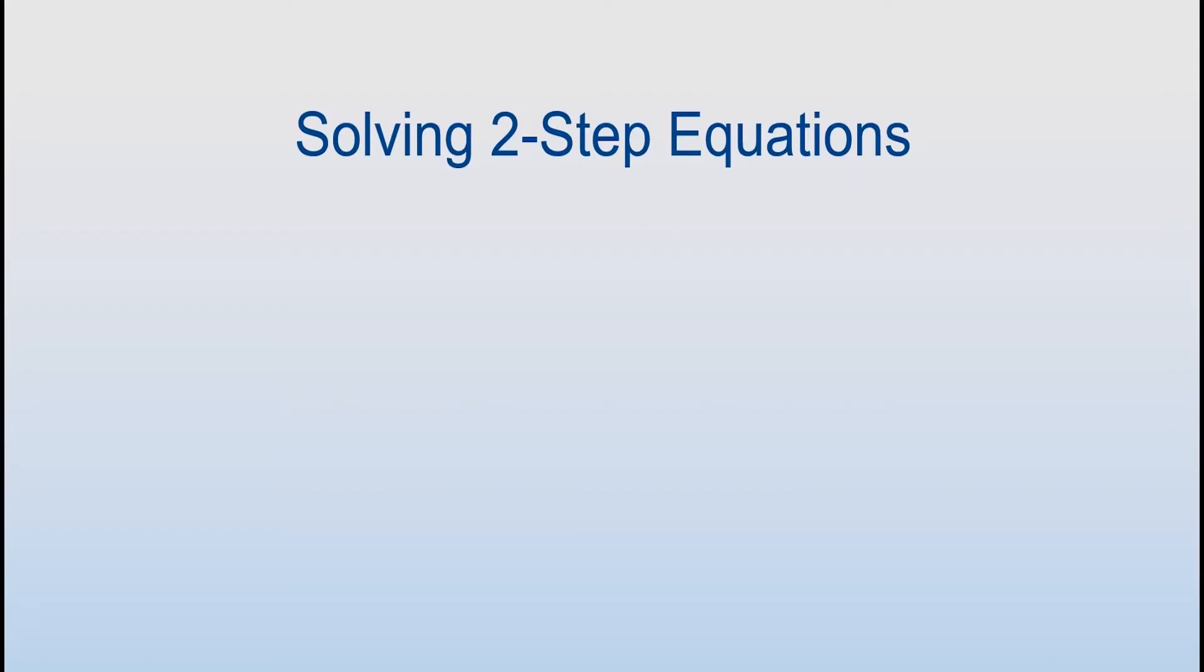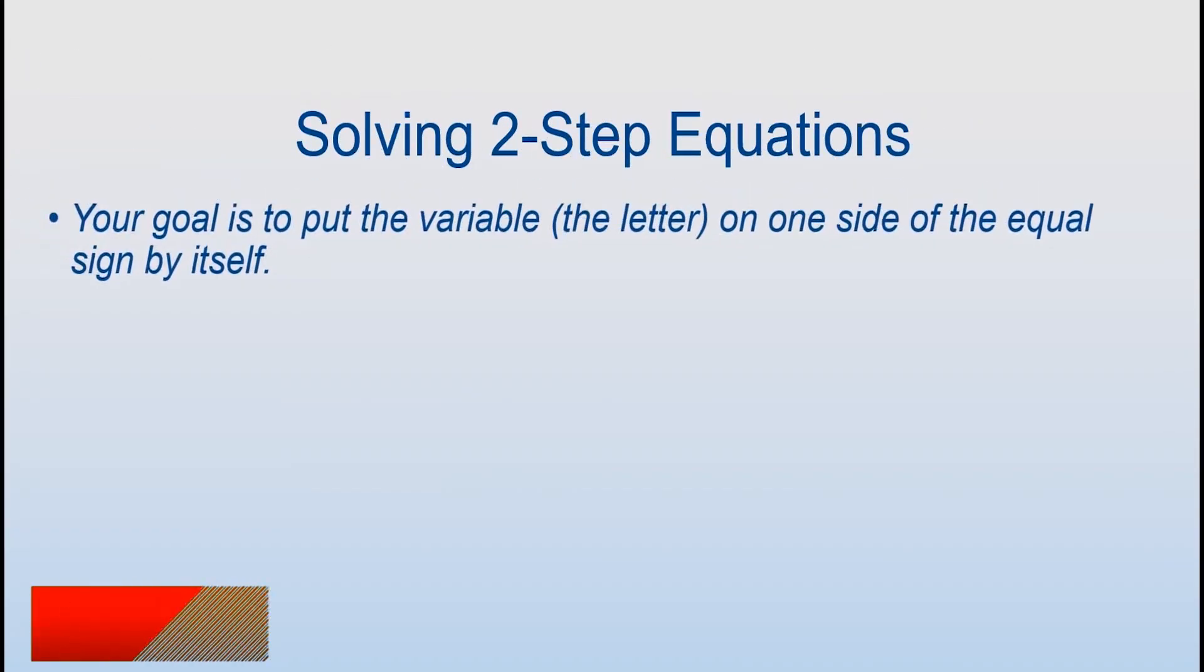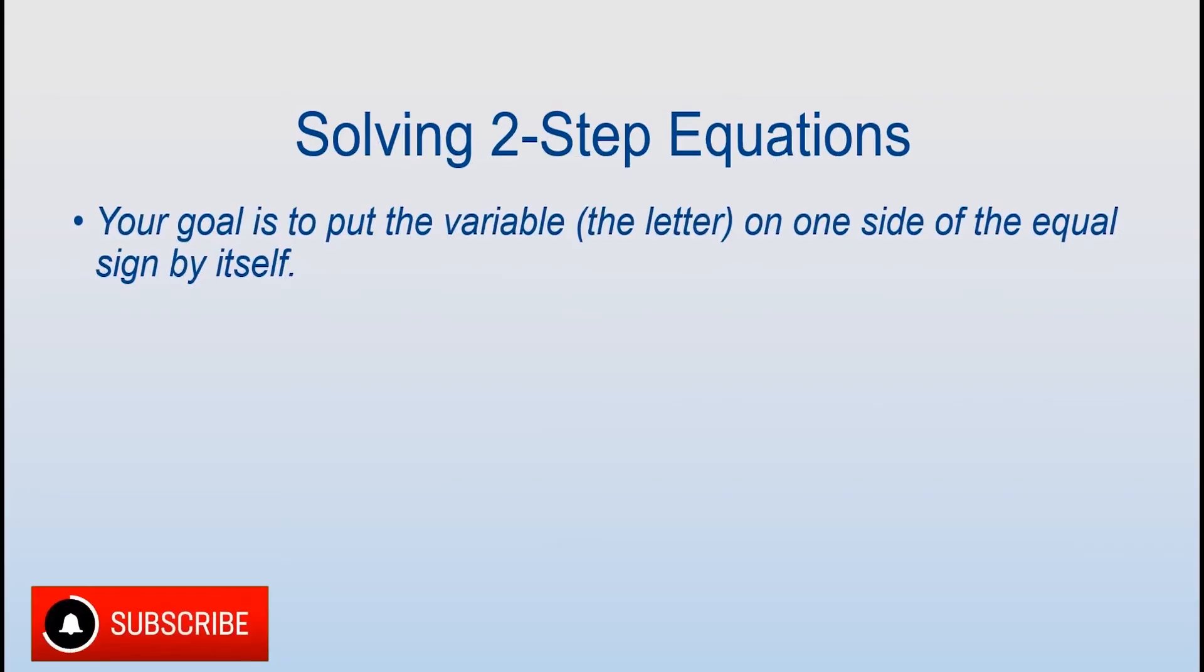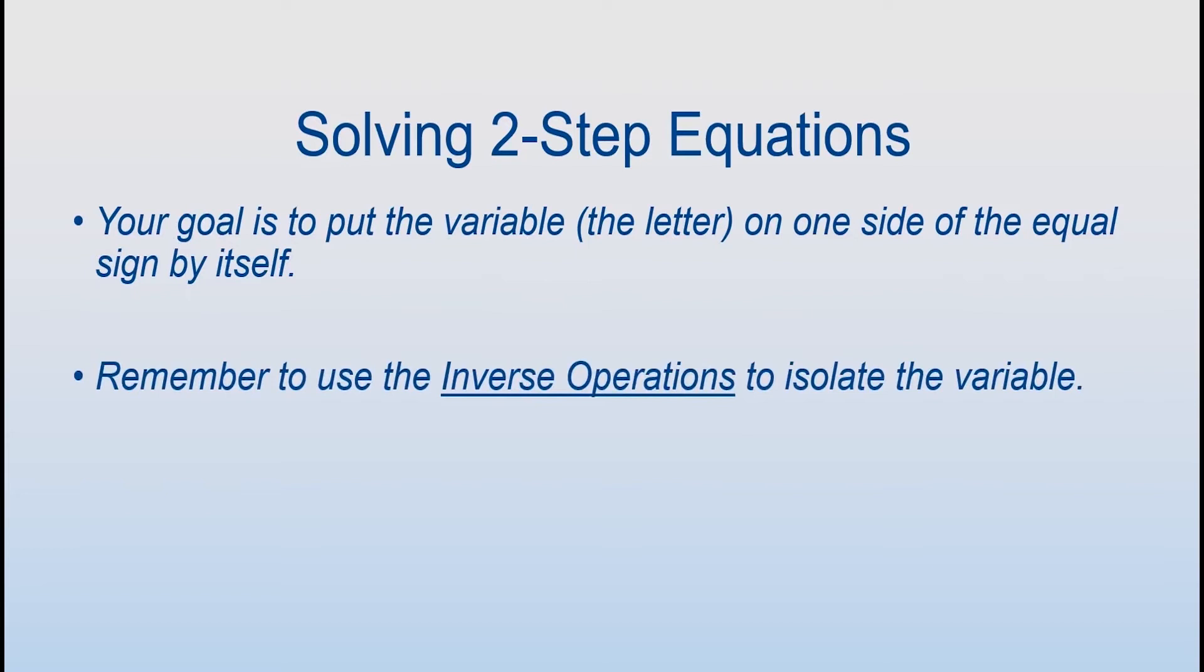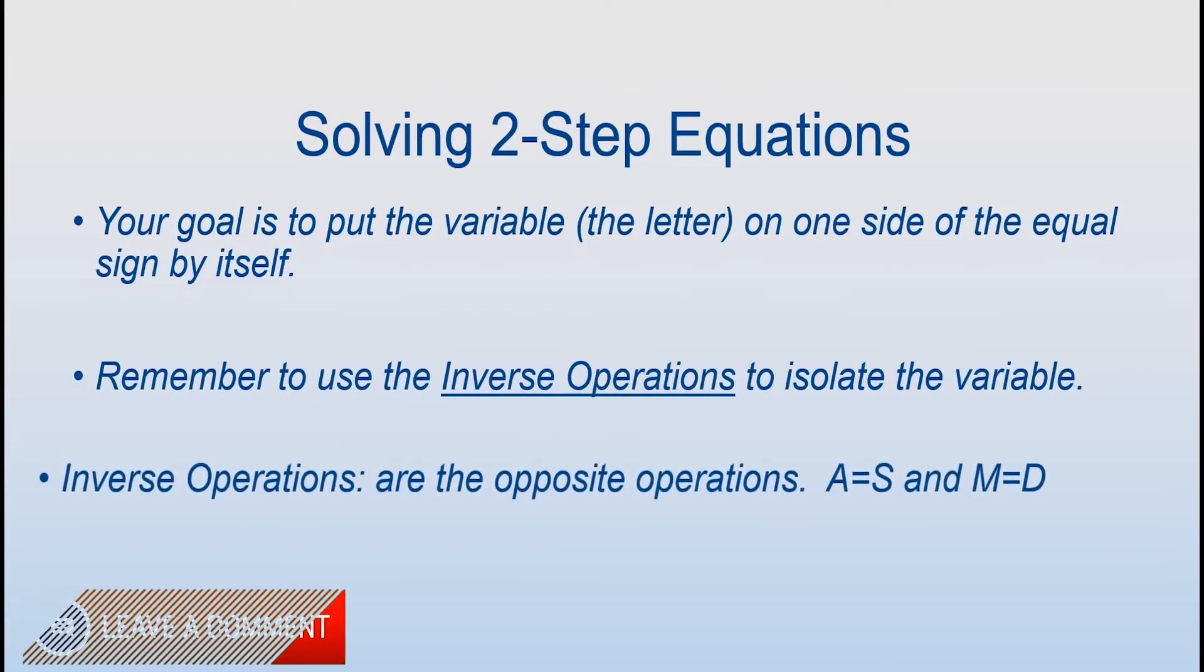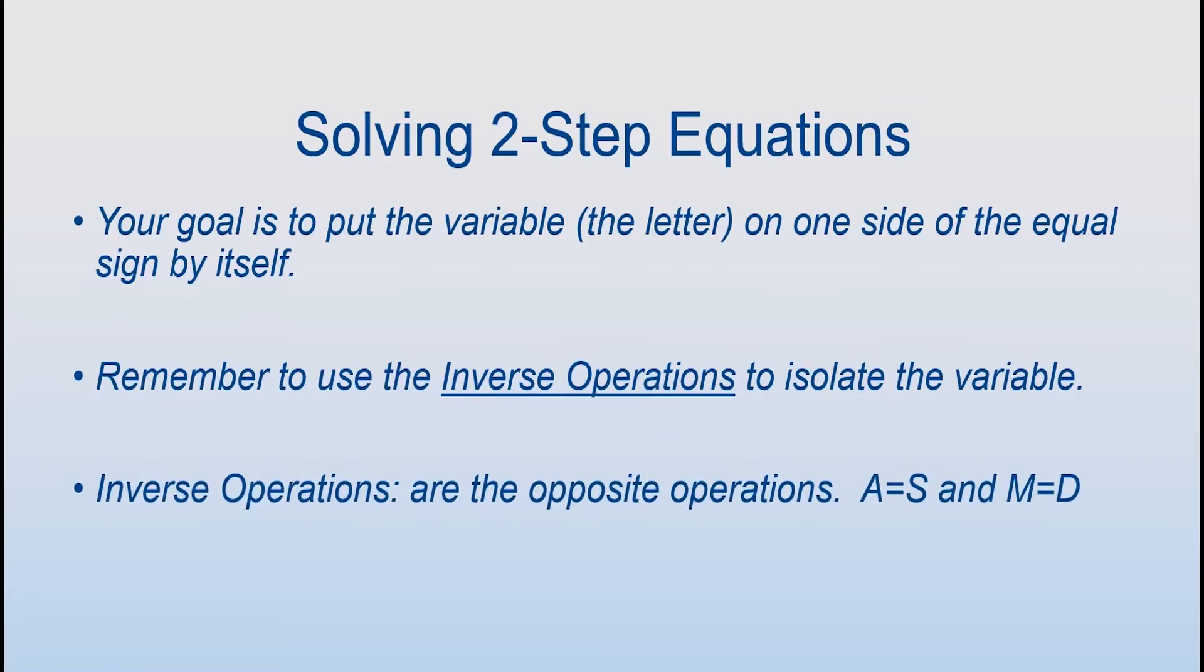Solving two-step equations: when solving two-step equations, you want to remember that your main goal is to put the variable, which is just a big fancy way of saying the letter, on one side of the equal sign by itself. In order to do that, you need to remember to use the inverse operations to isolate the variable. The inverse operations are the opposite operations, so the opposite of addition is subtraction and vice versa, and the opposite of multiplication is division and vice versa.